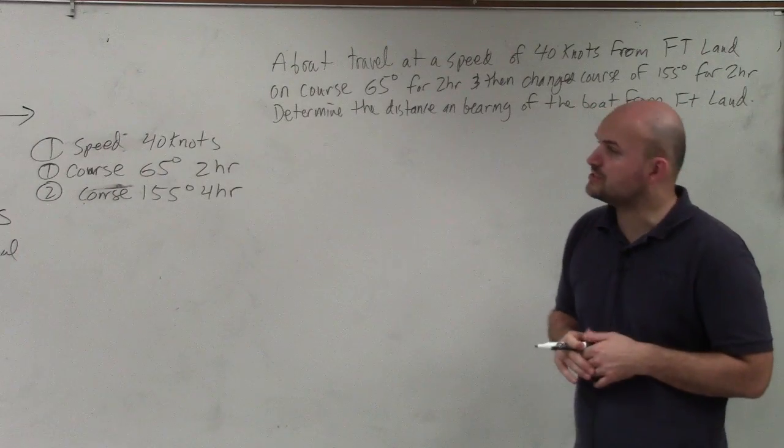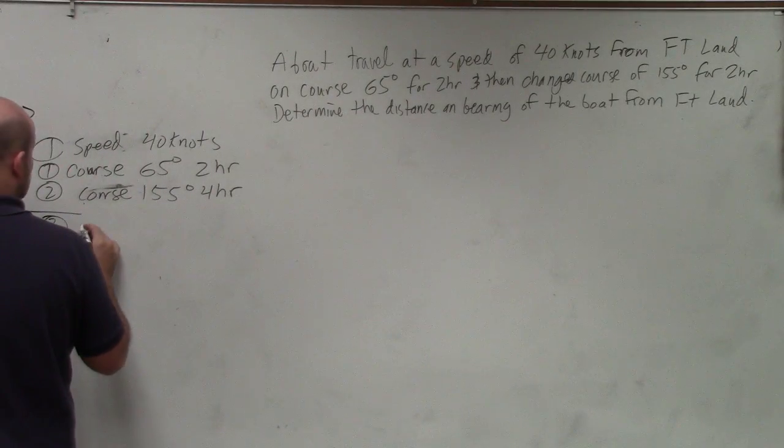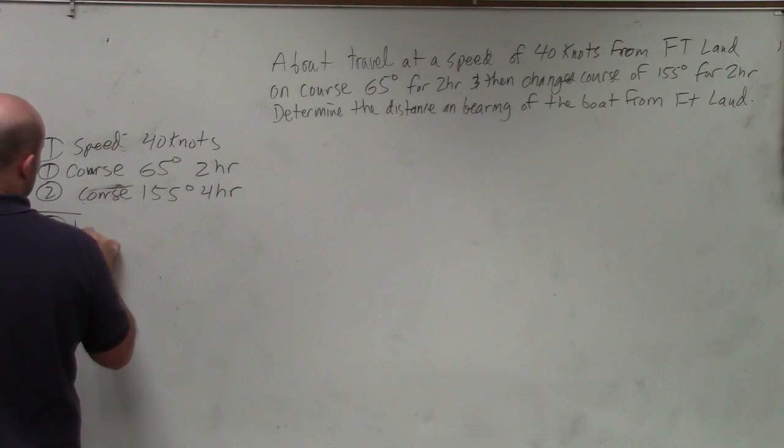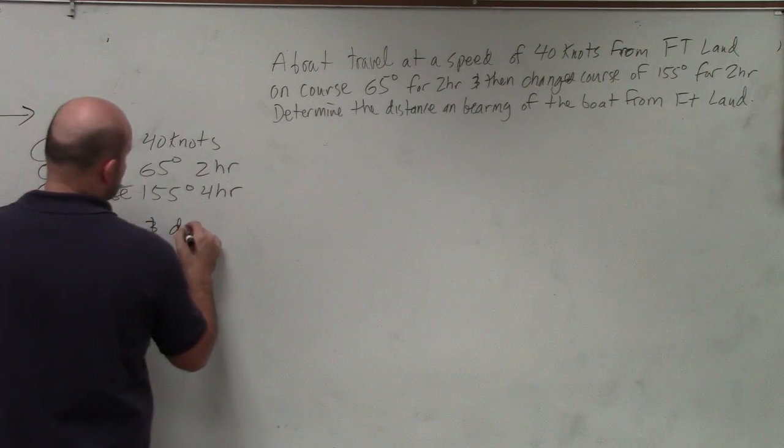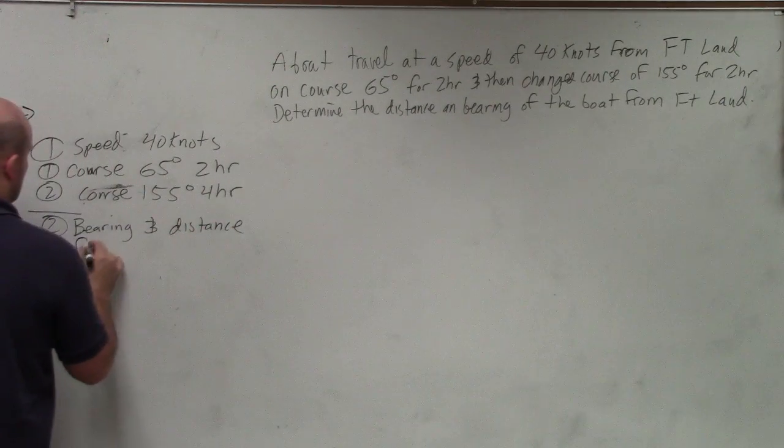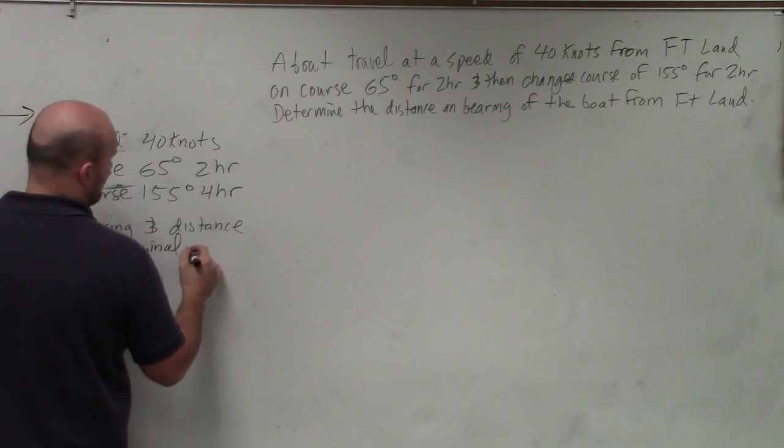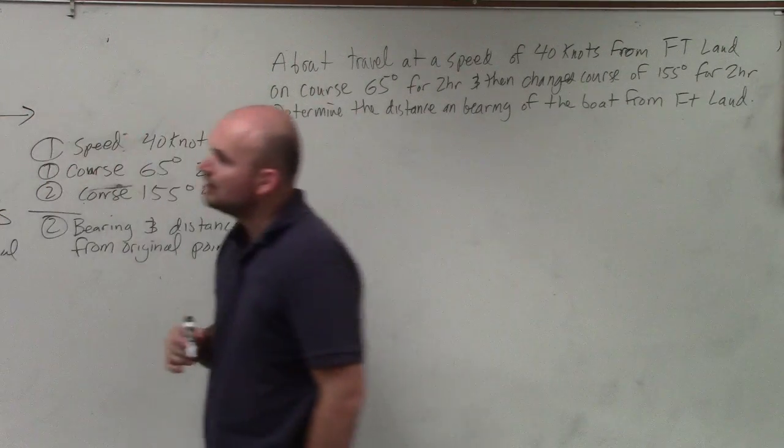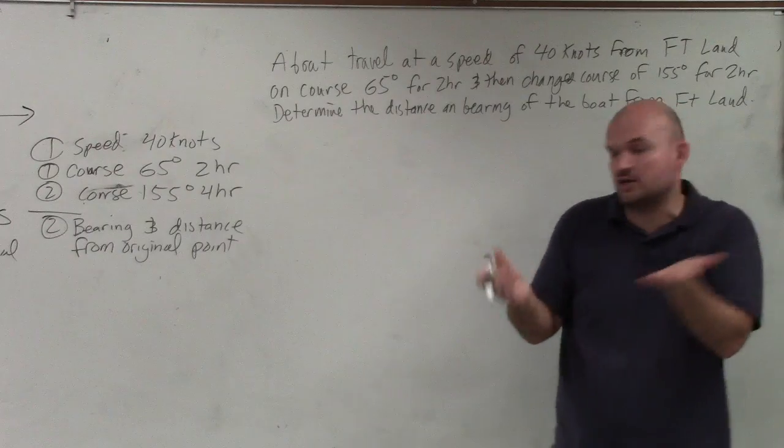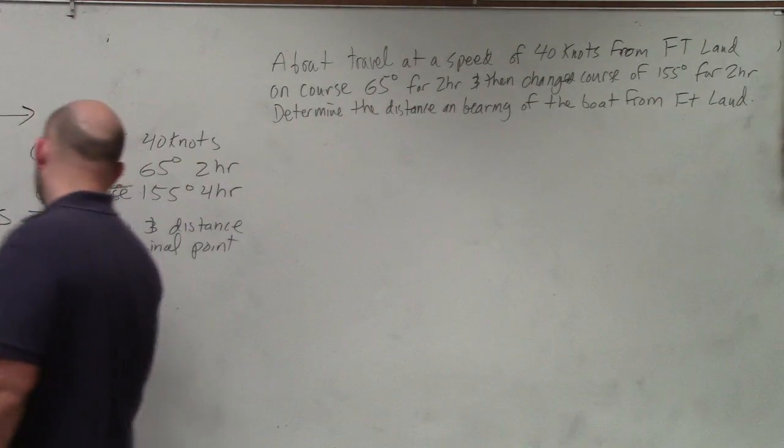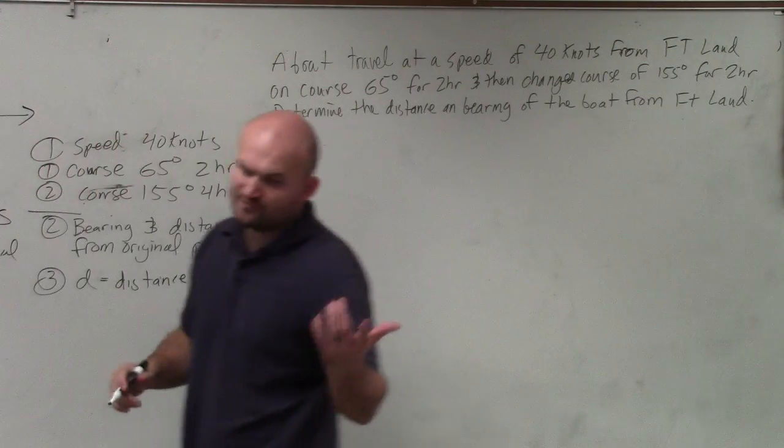Then they want us to, so step number two is identify what you need to solve. So step number two is we need to find the bearing, which is basically the direction, and the distance from original point, which is Fort Lauderdale. Define our variables. Well, the direction is not really going to be a variable. That's just going to be our direction. But number three, I'll say D. D is going to represent the distance from port, or from Fort Lauderdale.